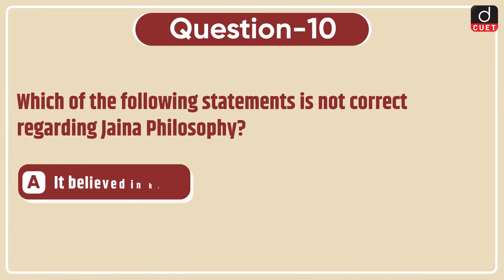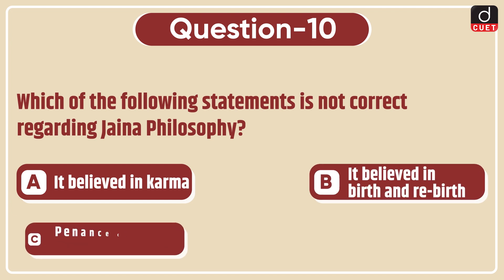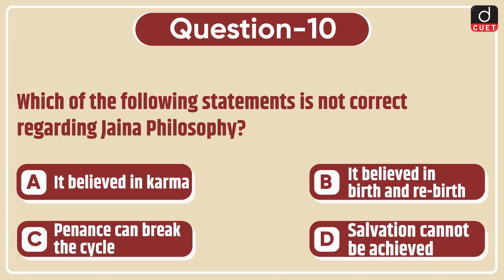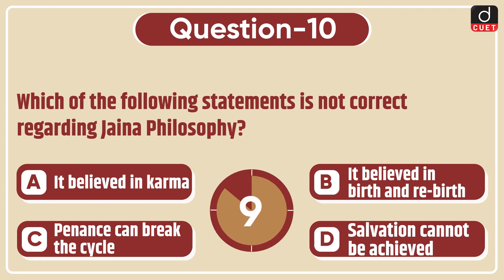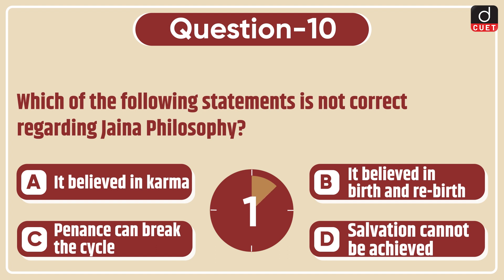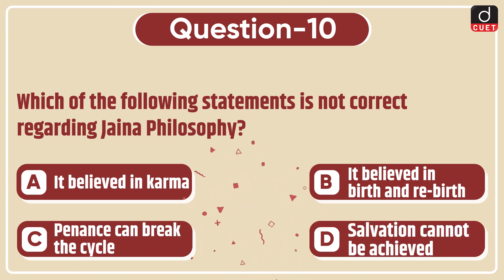Last question: Which of the following statements is not correct regarding Jain philosophy — It believed in Karma, It believed in Birth and Rebirth, Penance can break the cycle, or Salvation cannot be achieved? The correct answer is option D, Salvation cannot be achieved.